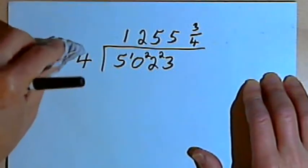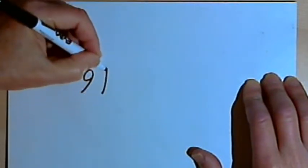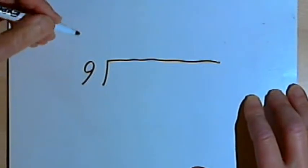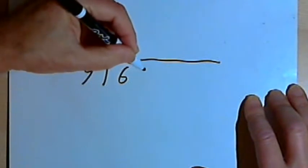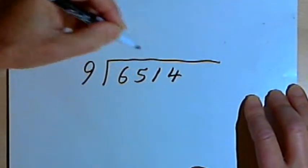Let's do one more, and I'll divide by 9. We're basically using this method to divide by single-digit numbers, and 9 is going to be the biggest single-digit number we can deal with. So let's make this 6,514. Let's see what happens with that.